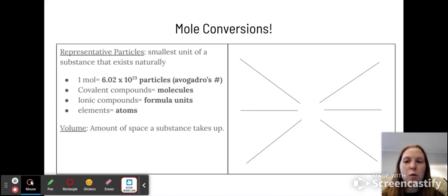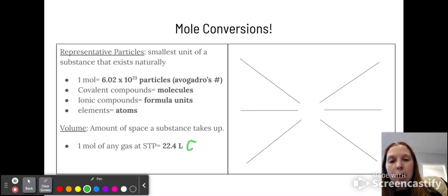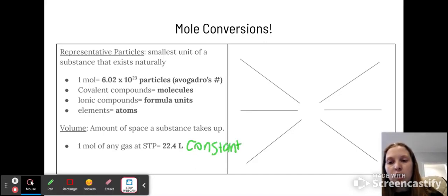And then we have volume, and for volume, it's defined as the amount of space an object takes up. When you're looking at moles, we are in chem 1 here, assuming a gas is at STP. So when we look at volume, we're looking specifically at a gas, and it's at standard temperature and pressure, which is on your reference packet. But one mole of any gas at STP is 22.4 liters all the time. So this is a constant. So that does not change.